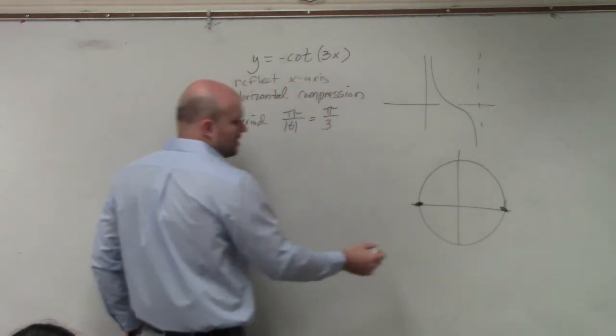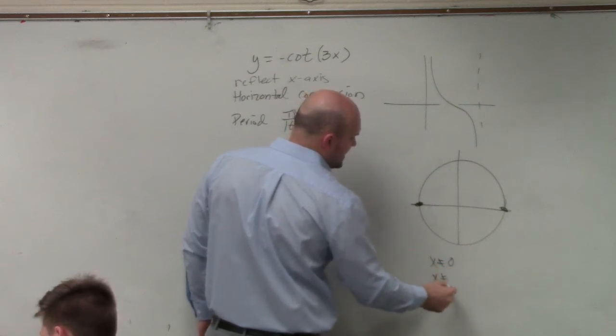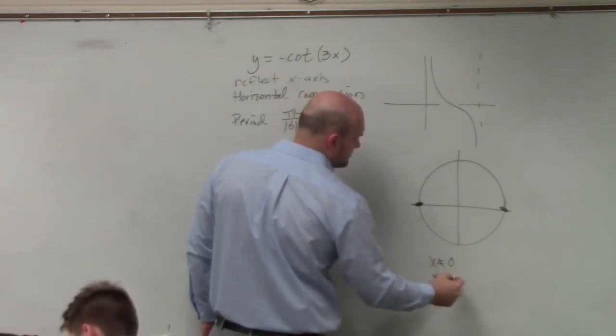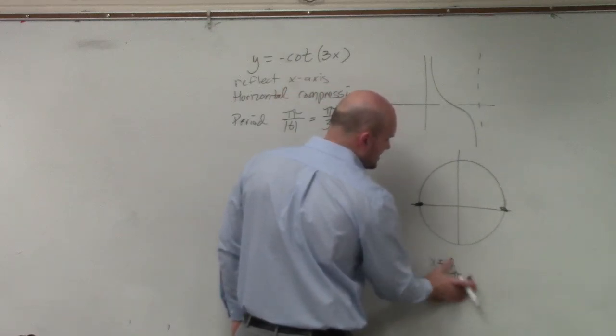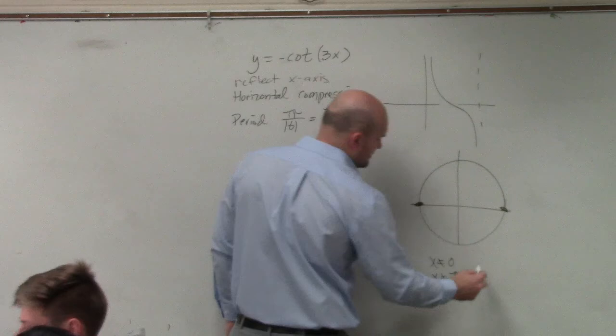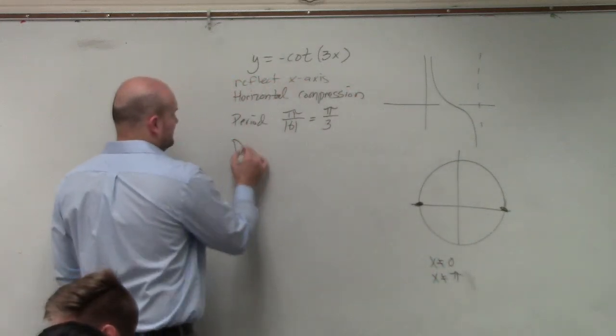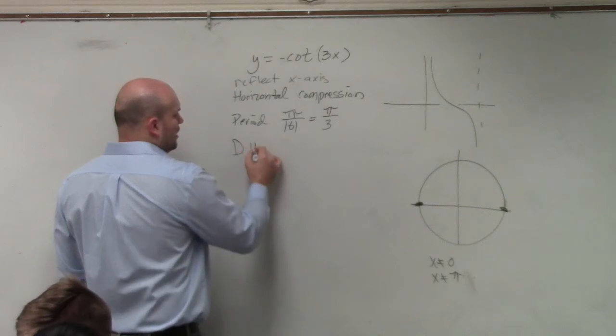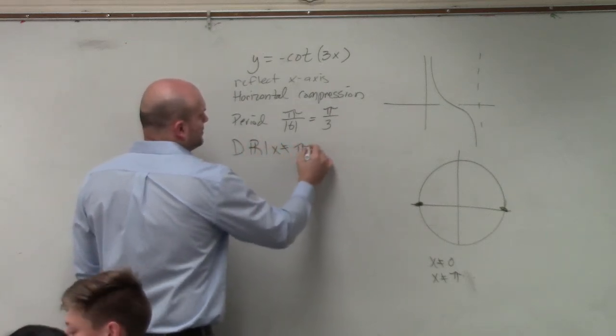So if you remember, our domain, we said x could not equal 0, x could not equal π. So what we did was π plus, or we said πn. So what we said was our domain, you didn't need to write the domain, was all real numbers such that x could not equal πn.